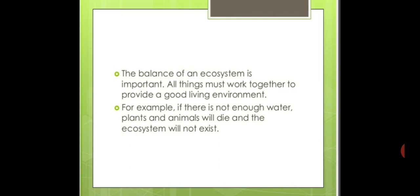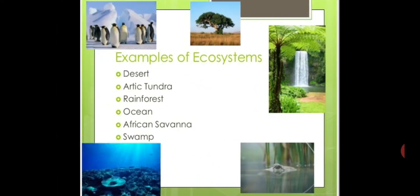The balance of an ecosystem is important. All living things must work together to provide a good living environment. For example, if there is not enough water, plants and animals will die and the ecosystem will not exist. Water, which is a non-living thing, is something that living things like plants and animals are totally dependent on. So every part of the ecosystem helps to maintain balance.